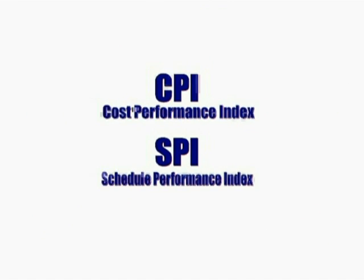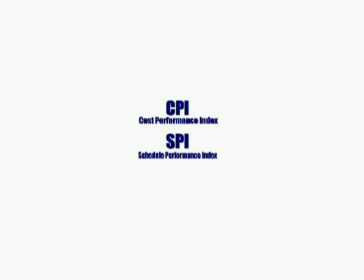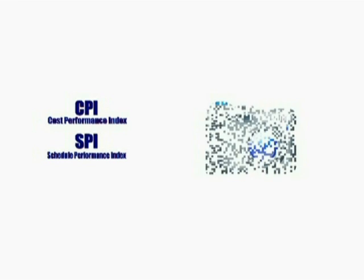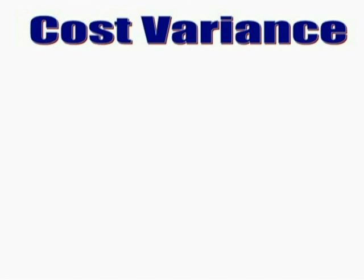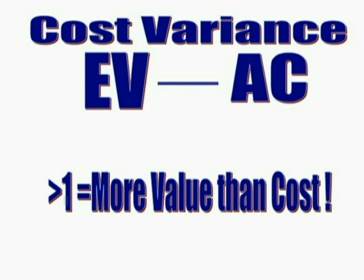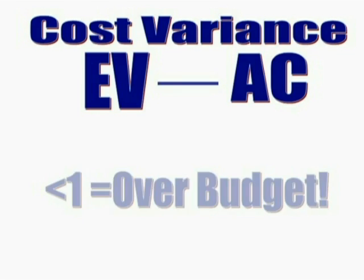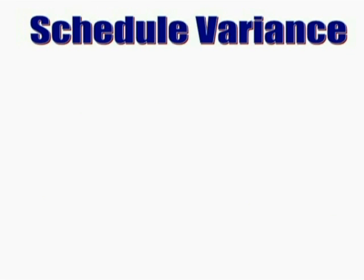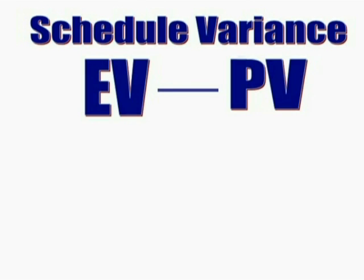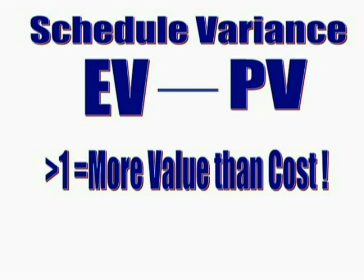The CPI and SPI snapshot tell you where you currently are, but we can also calculate variances for cost and schedule. Earned value minus actual cost shows the cost variance — positive is good, meaning more value has been produced than it costs to accomplish the work. A negative value indicates the opposite. Subtracting the planned value from the earned value gives you the schedule variance. Since planned value is an expression of time in dollars, positive schedule variance is good — it shows more value earned than planned.